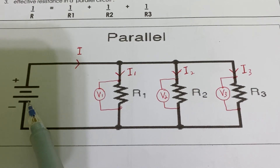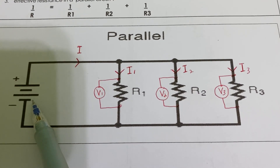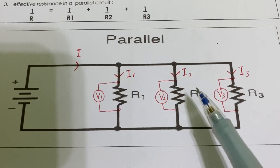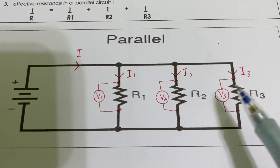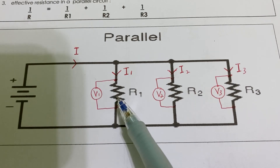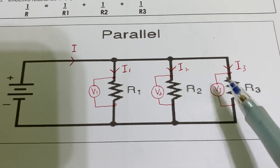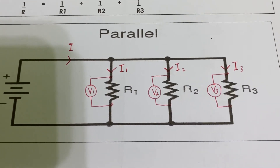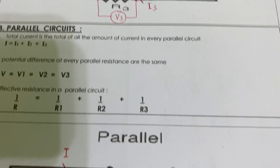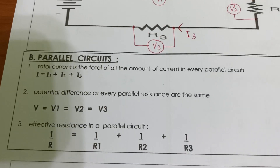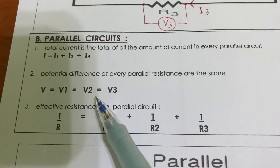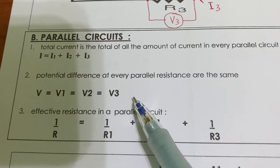The main source voltage, called effective voltage, will have the same value at each branch. If this is 9 volt, each branch will also be 9 volt, 9 volt, and 9 volt. So in parallel, the voltage is equivalent — equal — at every point.